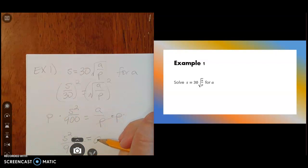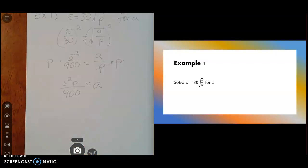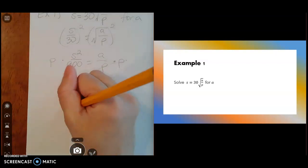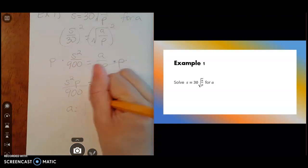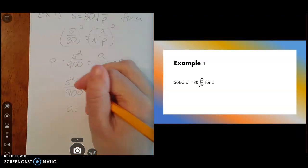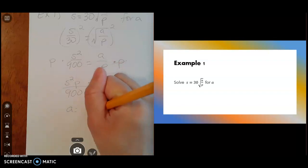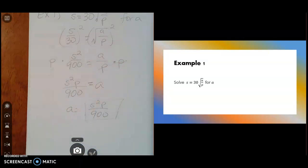So if it just says, hey, solve it for A, well, usually they kind of flip it around and say A equals blank. And like that, we'll just say A equals S squared P over 900. And there's our answer.